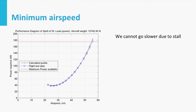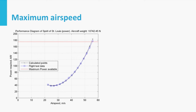Now let's have a look at minimum airspeed in the performance diagram. It is essentially where the power curve stops on the left-hand side. This concludes the discussion on minimum airspeed. Now let's look at the other end of the spectrum — maximum airspeed. If we already have the performance diagram, we can use it to graphically determine the maximum airspeed.